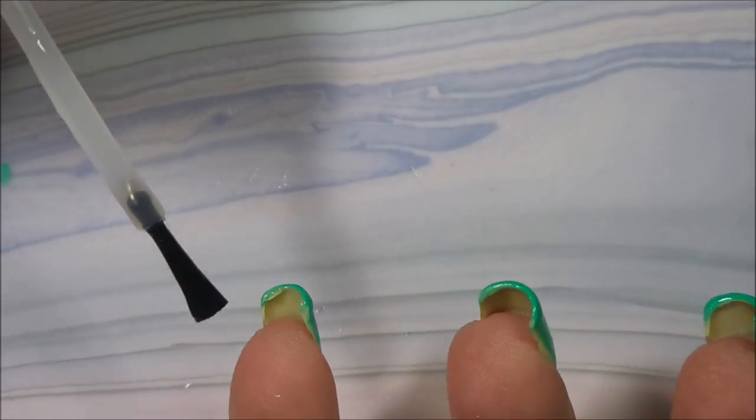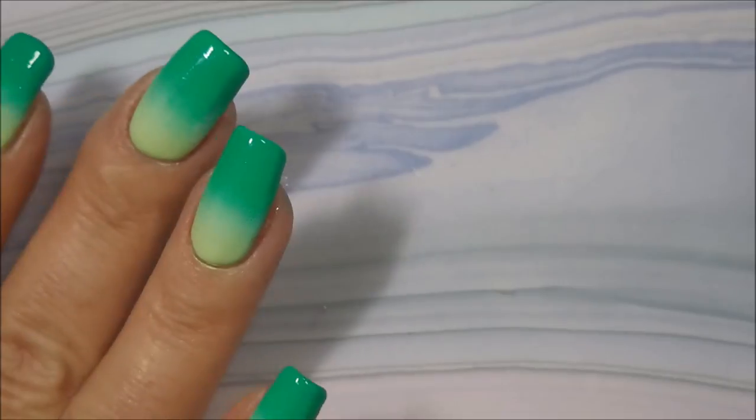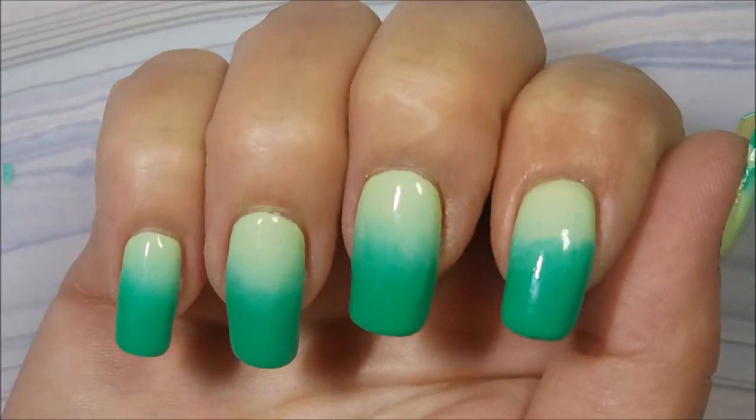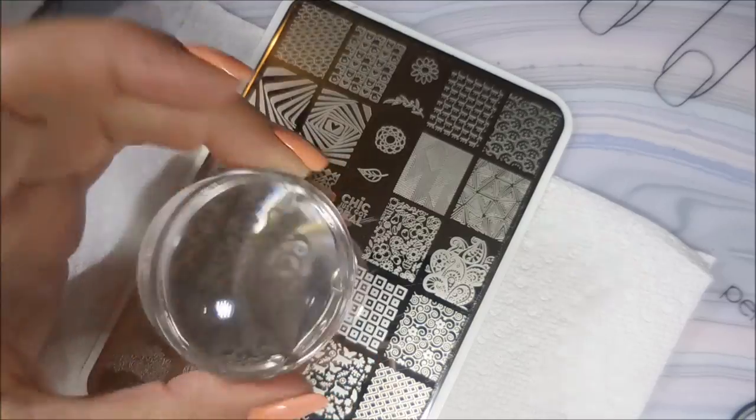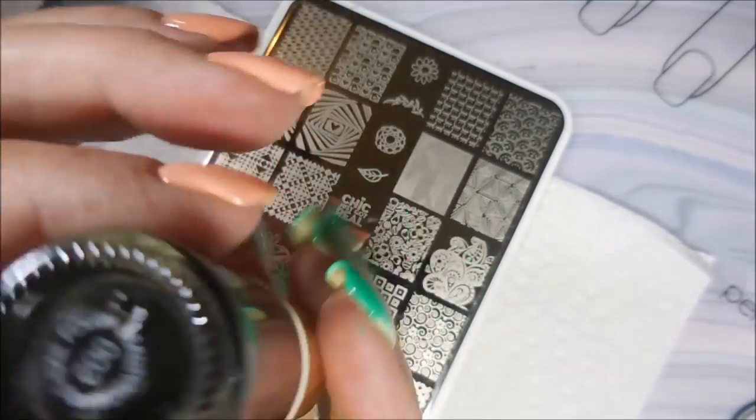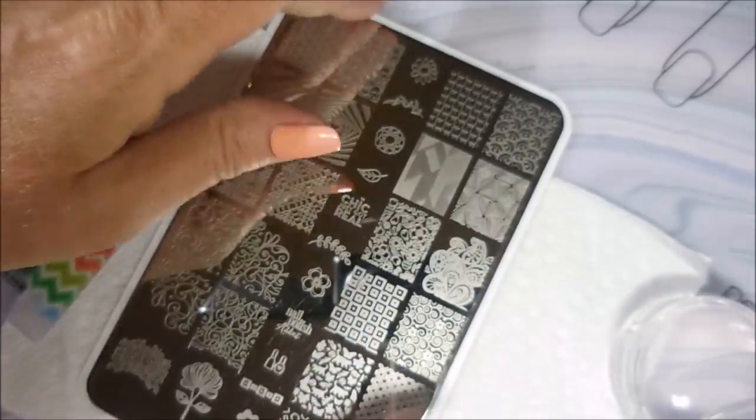This is one of those manicures right here that you could just stop right there and wear it just like that. Amazing. All on its own. But, we're going to stamp. I'm going to be using my Bundle Monster Monocle Stamper and this Beauty Big Bang Black Stamping Polish.